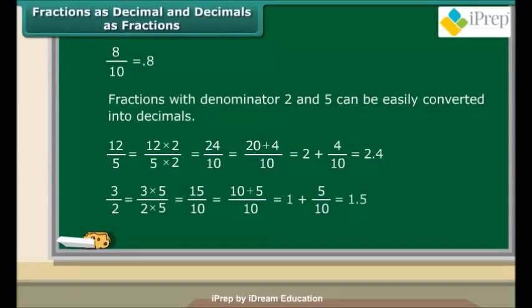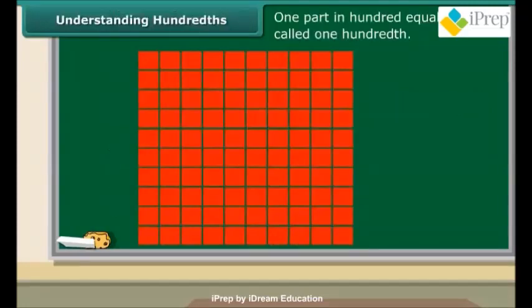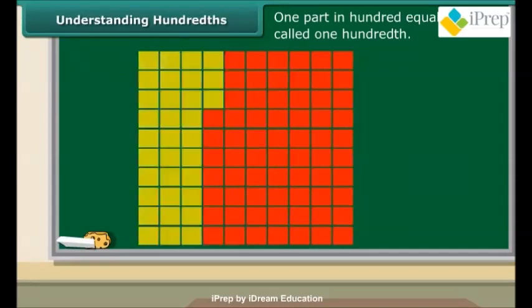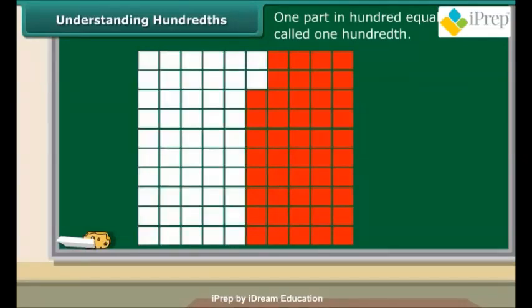Another way to convert such fractions is to simply divide the numerator by the denominator. 1 part in 100 equal parts is called 1/100. Each small square is called 1/100 of the whole square. In decimal notation, we read it as 0.01. 12 shaded squares will make 12 hundredths, or 0.12. 32 shaded squares will make 32 hundredths, or 0.32. 52 shaded squares will make 52 hundredths, or 0.52.